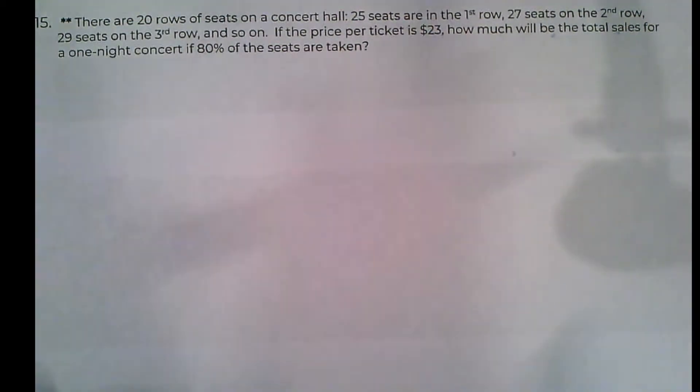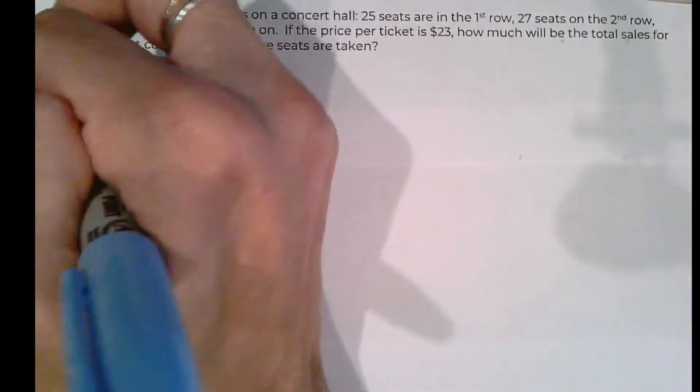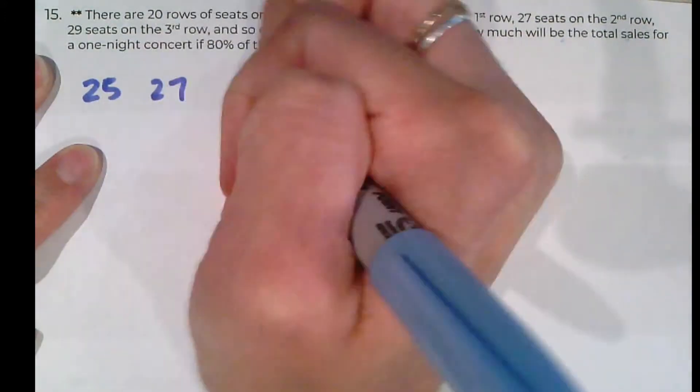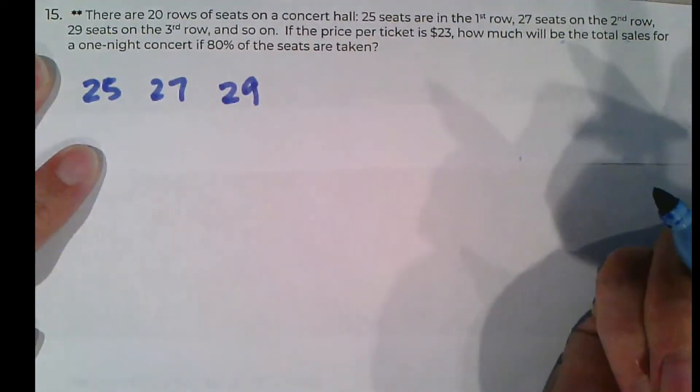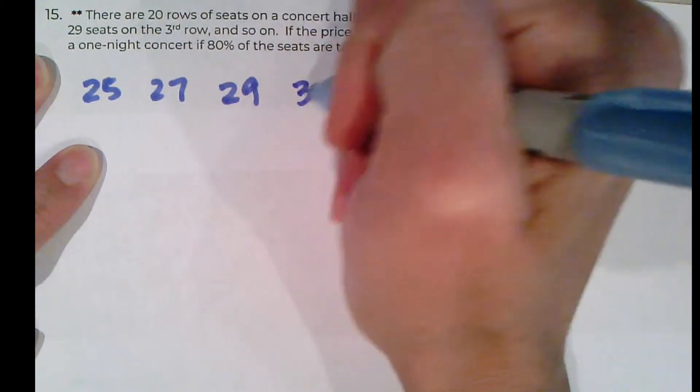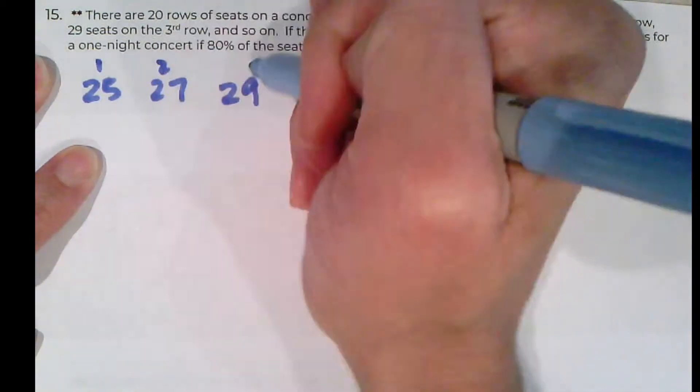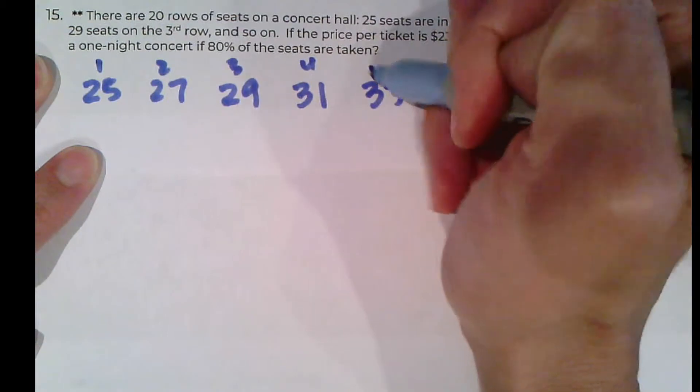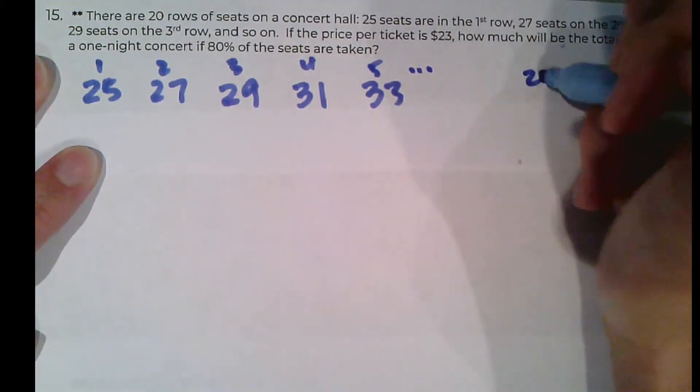So we can see a nice little pattern here, right? 25, 27, 29. We're just adding two each time. So the next one's going to be 31, then 33, row 1, row 2, 3, 4, 5, and we're going to 20 rows, right?